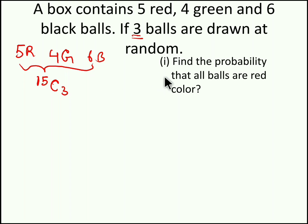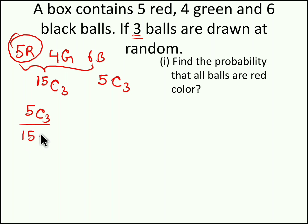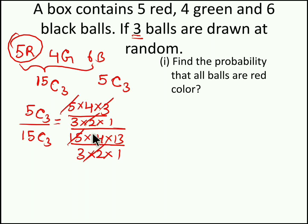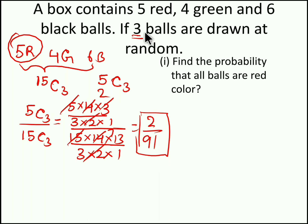What we exactly want is to choose 3 red color balls. We totally have 5 red color balls, from which we have to choose 3. So 5C3 is our total number of events and 15C3 is our total sample space. So 5C3 divided by 15C3: 5C3 is 5×4×3 / (3×2×1) and 15C3 is 15×14×13 / (3×2×1). After cancellation we get 2/91. So 2/91 is the probability of getting 3 red balls.